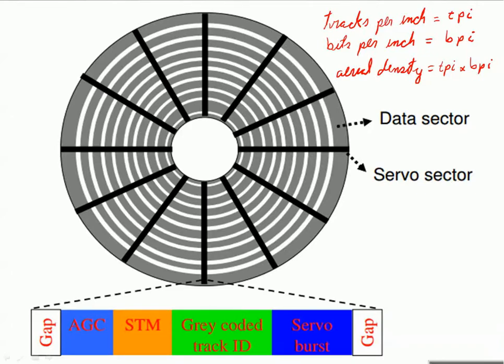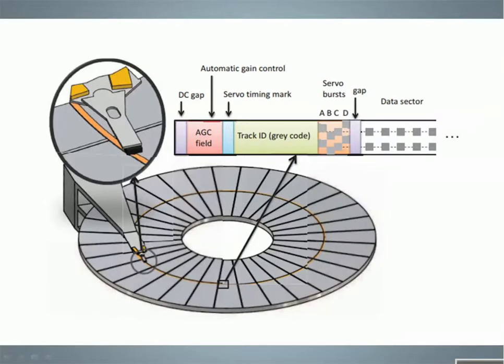For control purposes, we need to focus now on the servo sectors. Next picture is more illustrative on this respect. Here we can see what happens. To read or write the information on a track, the voice coil motor must move the head to the corresponding track. This is called seek.